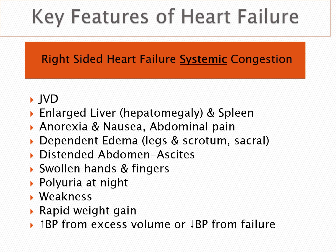Right-sided heart failure cannot get blood from the periphery into the lungs, so most of the signs and symptoms we see are related to excess peripheral blood or edema. We can see JVD from the extra blood trying to get into the heart. We can see enlarged livers and spleens from excess fluid seeping into the organs. Patients can have anorexia, nausea, and abdominal pain from excess fluid building up around their abdominal organs and in the abdominal cavity. This also causes abdominal distension — these patients can look 18 months pregnant. We will see dependent edema from the toes all the way up to the sacrum, scrotum, up the abdomen, and even in the fingers and hands.